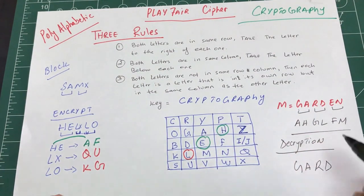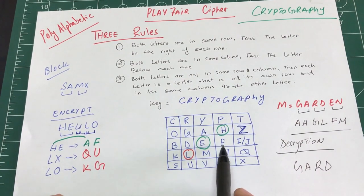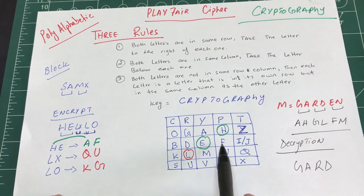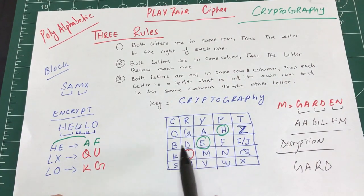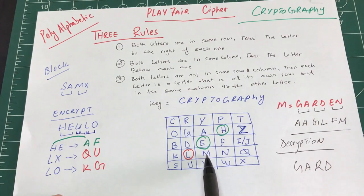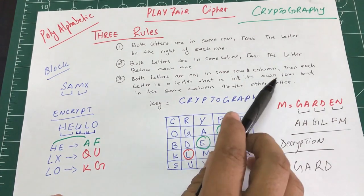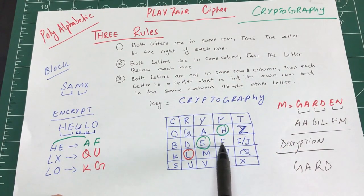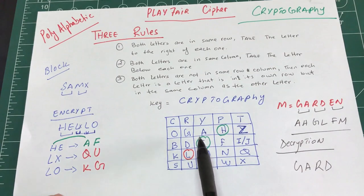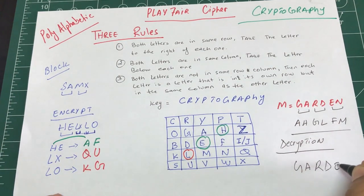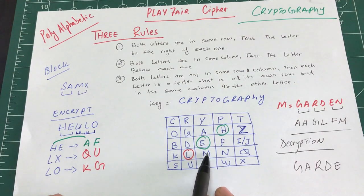For FM: F and M are in different rows and columns, so we apply the rectangle rule in reverse — same row, same column as the other letter. The decryption of F is in F's row but in M's column, giving E. The decryption of M is in M's row but in F's column, giving N. So FM → EN, recovering the original.